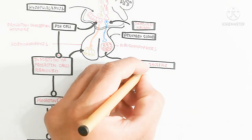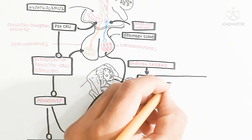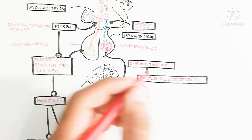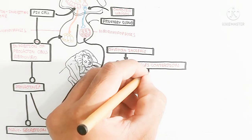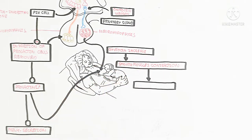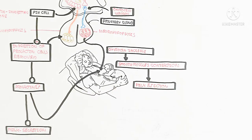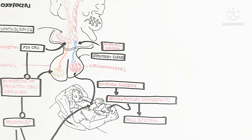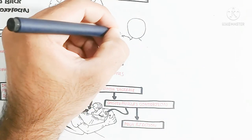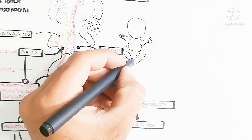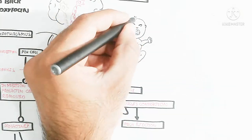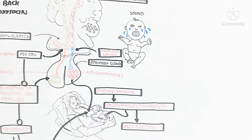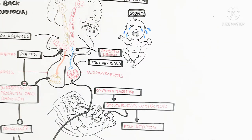The increase in oxytocin stimulates smooth muscle contraction of the mammary gland, leading to milk ejection. The baby contains mechanoreceptors, which are stimulated by sensory nerves through the sensation of touch or slight pressure. The weeping of the child sends a sound signal to the higher brain center and somatosensory cortex through hearing.